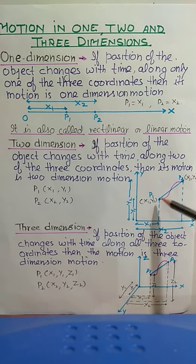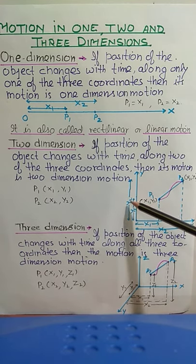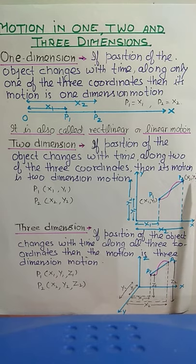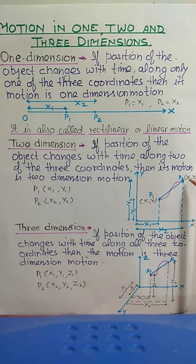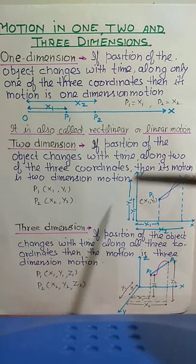In the graph for two-dimensional motion, the x-axis and y-axis are shown. The initial position of the object is P1 and after some time it becomes P2. The coordinates of P1 are (x1, y1) and of P2 are (x2, y2). Both x and y coordinates are changing — x1 changes to x2 and y1 changes to y2. This type of motion where position changes along two coordinates is two-dimensional motion.